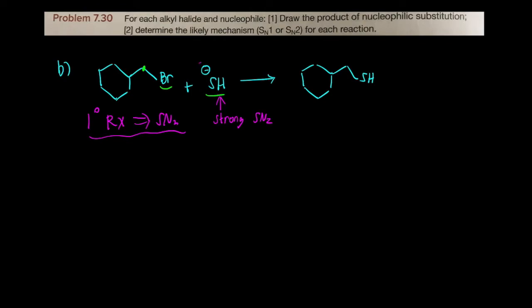The curved arrow reaction mechanism is one step. You just attack and kick off the leaving group. We can do this for primary alkyl halides because there's not that much sterics. So I call this step attack.